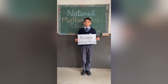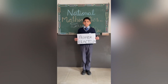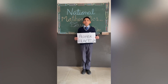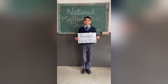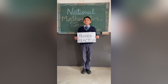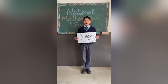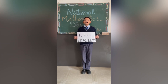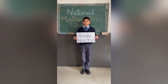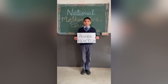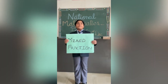A fraction in which the numerator is less than the denominator is called a proper fraction. The value of a proper fraction is less than 1. For example, 1 upon 2, 3 upon 5, 7 upon 9, 10 upon 10, etc. are proper fractions.